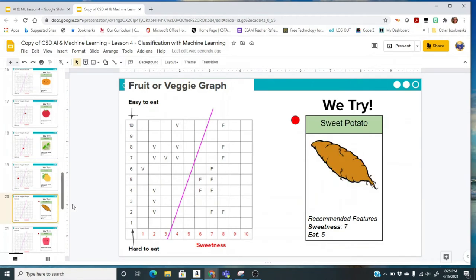The next one is a sweet potato. Sweet potatoes are really good, I think. The sweetness they have here is 7 and the eat is a 5. So it's about right here. And so my model says that it is a fruit.